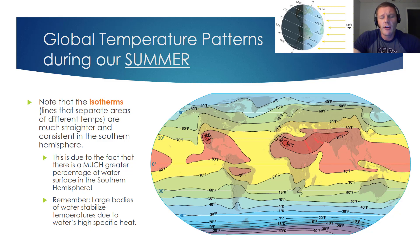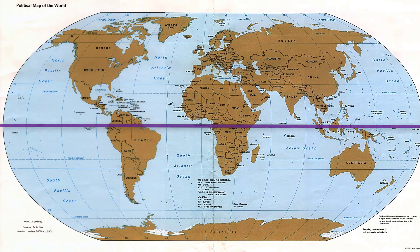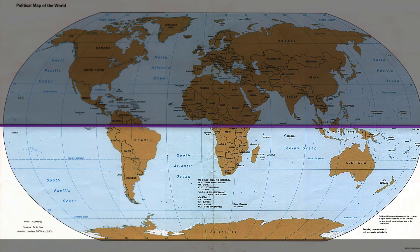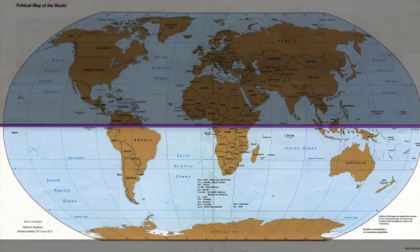Why do those isotherms tend to be straighter in the Southern Hemisphere than in the Northern Hemisphere? If we start by looking at the top half of the globe, notice that most of the land mass occurs in the Northern Hemisphere. Keep in mind that land can heat and cool very rapidly, whereas the oceans, with their very high heat capacities, tend to maintain relatively consistent temperatures throughout the year. In the Southern Hemisphere, there's much less land and a lot more water than in the Northern Hemisphere.